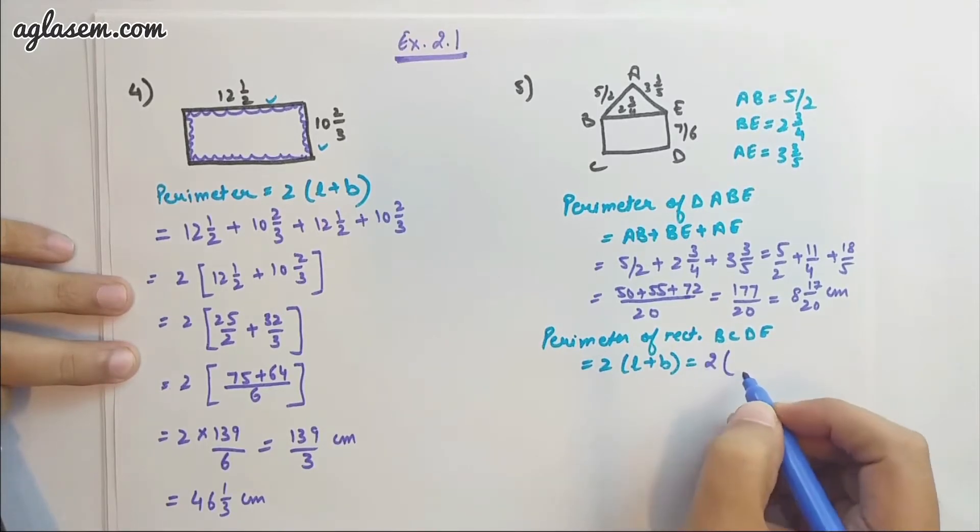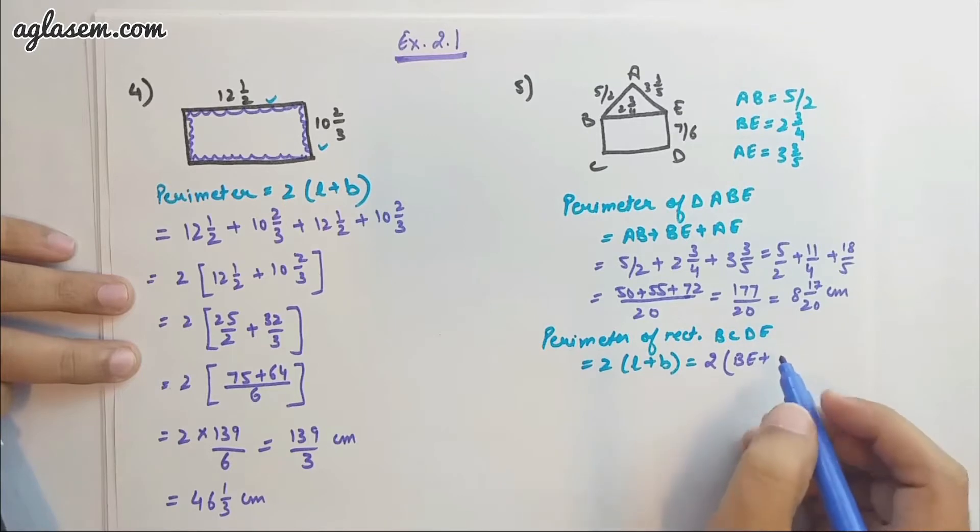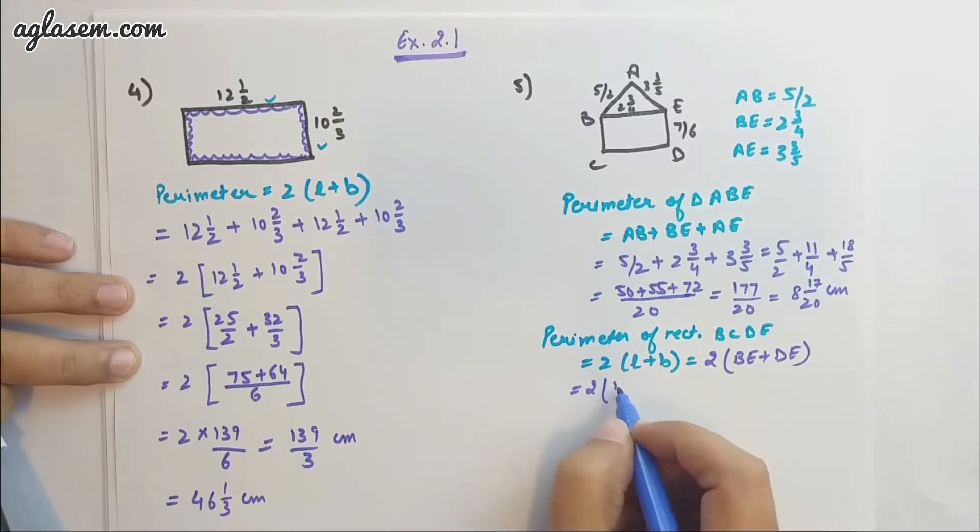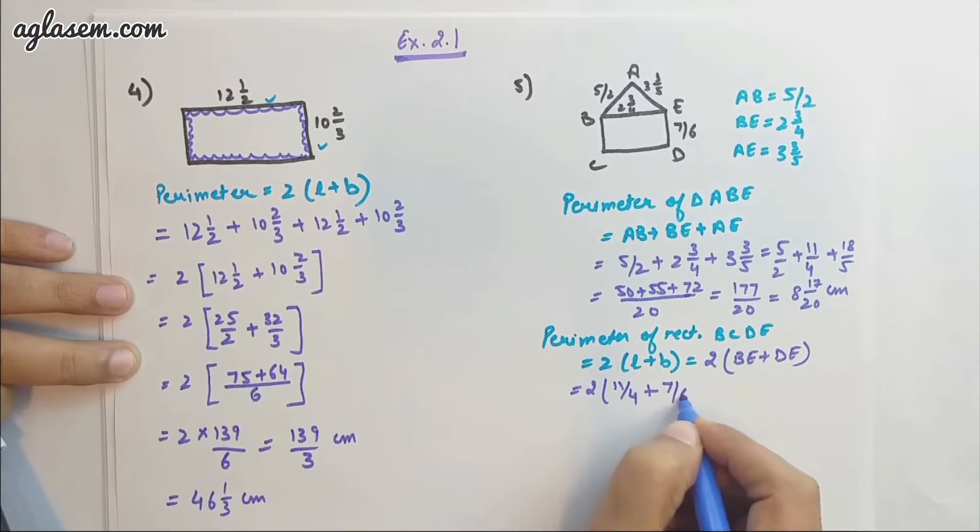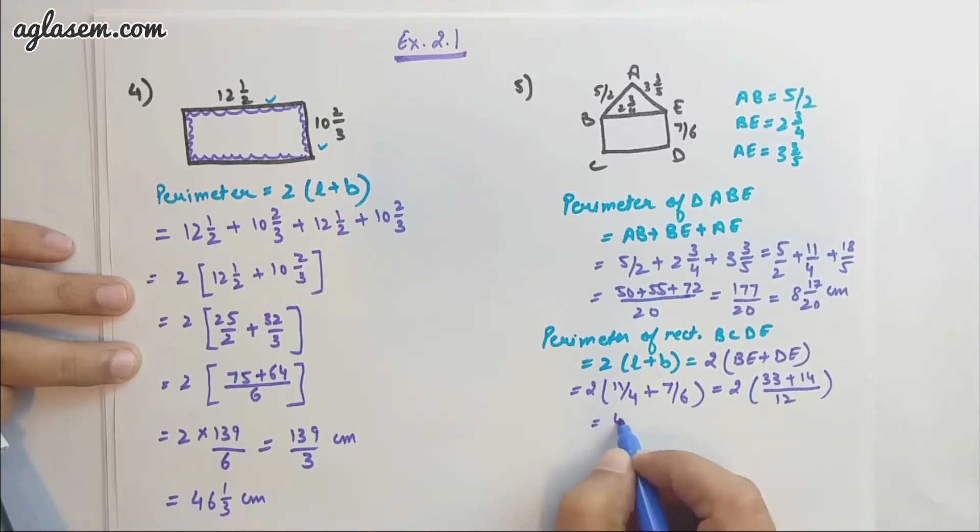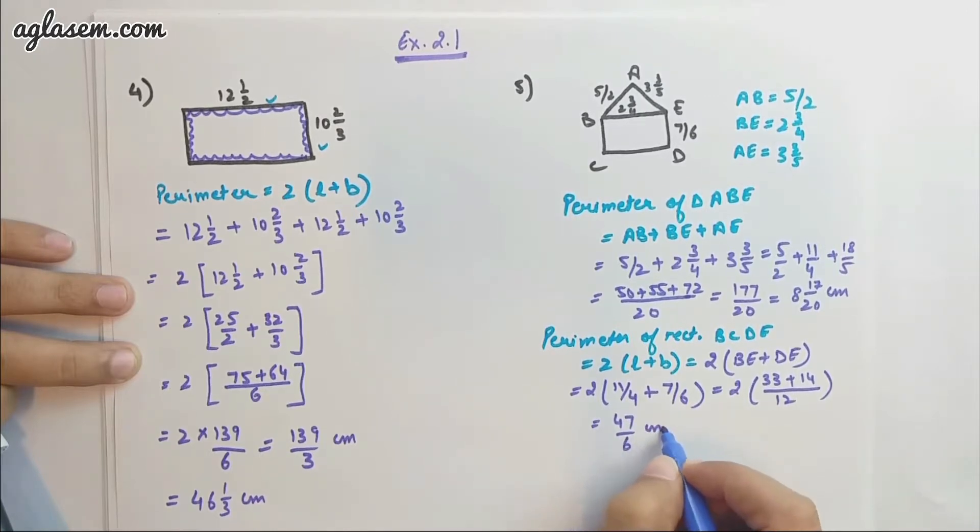That is 2 of BE + DE. BE is 2 3/4, that is 11/4, plus DE is 7/6. LCM of 4 and 6 is 12, so here we'll have 33 and here we'll have 14.